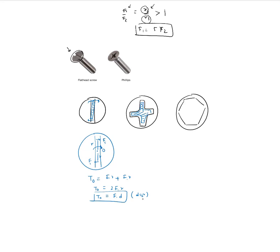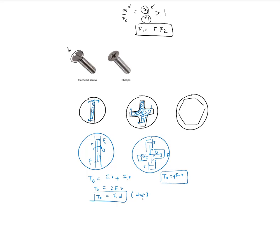For a Phillips screwdriver, you have four sections. Each edge pushes against the slots in four different directions. Drawing the free body diagram: you have a force f on each of the four edges, each at distance r from center O. The torque is 4·f·r, which in terms of diameter is 2f·d, since d = 2r.